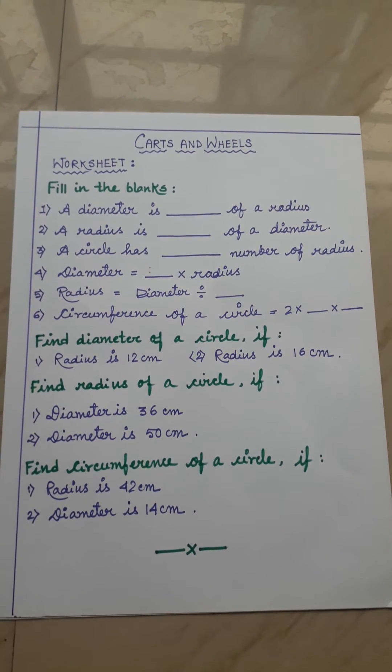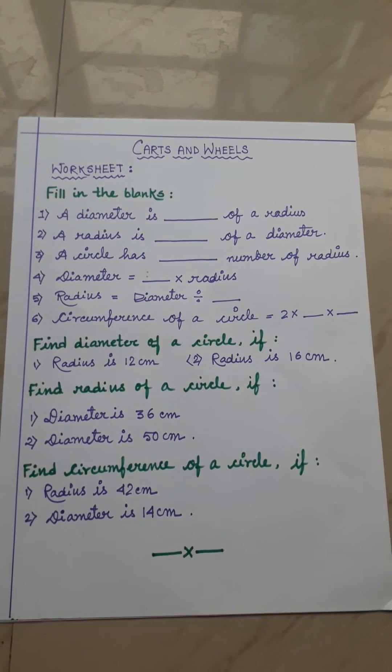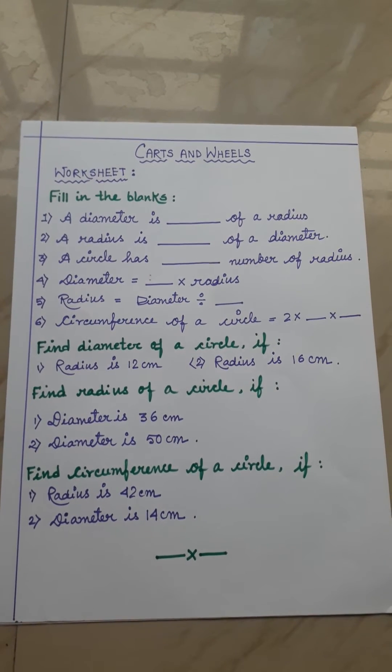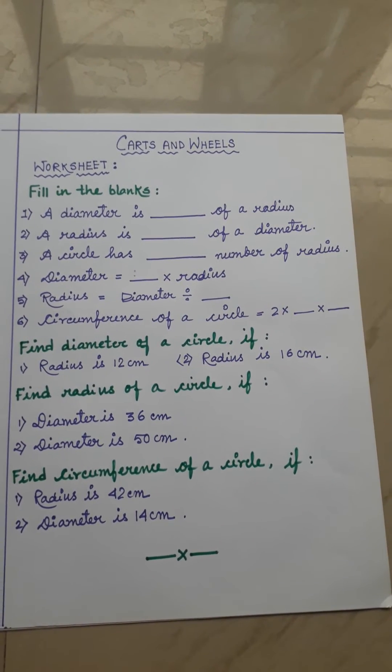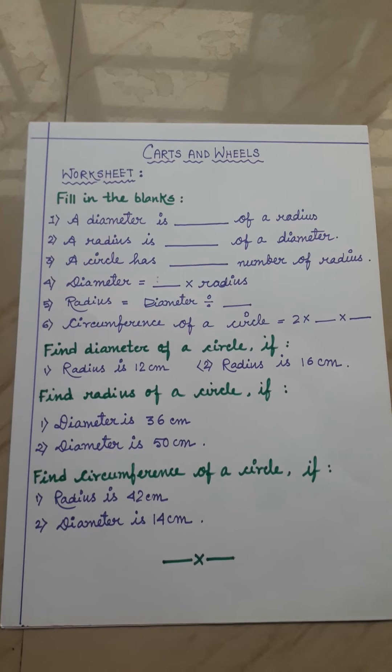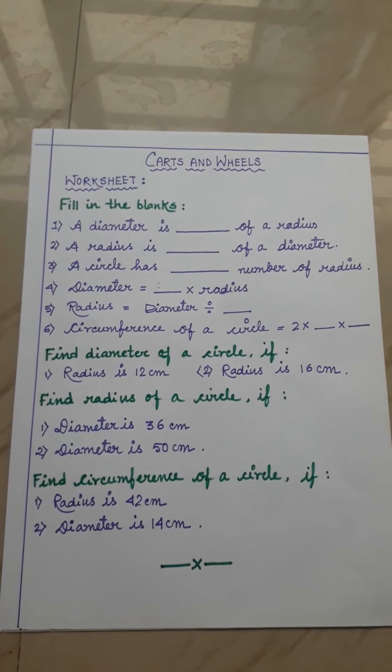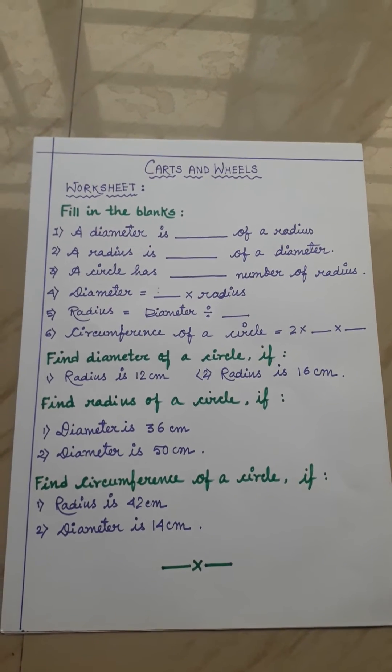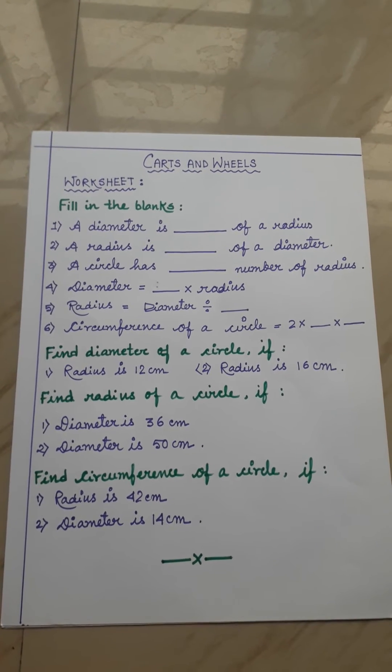The second one is: find diameter of a circle if (1) radius is 12 centimeter (2) radius is 16 centimeter. So here radius is given, you have to find out diameter just by using formula. You can easily do it.